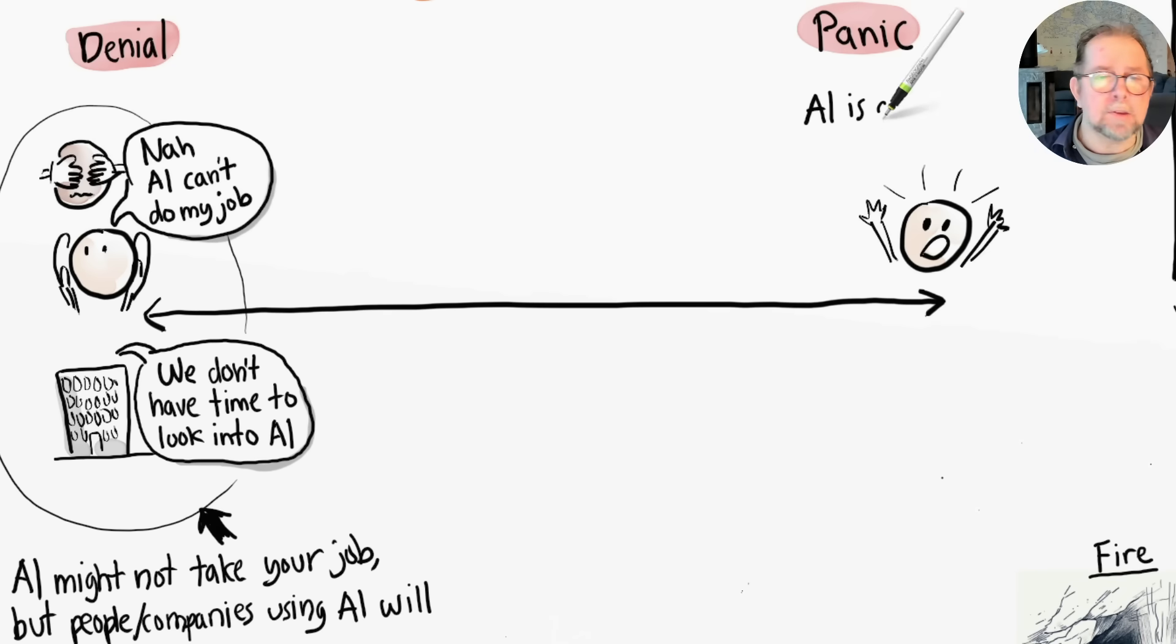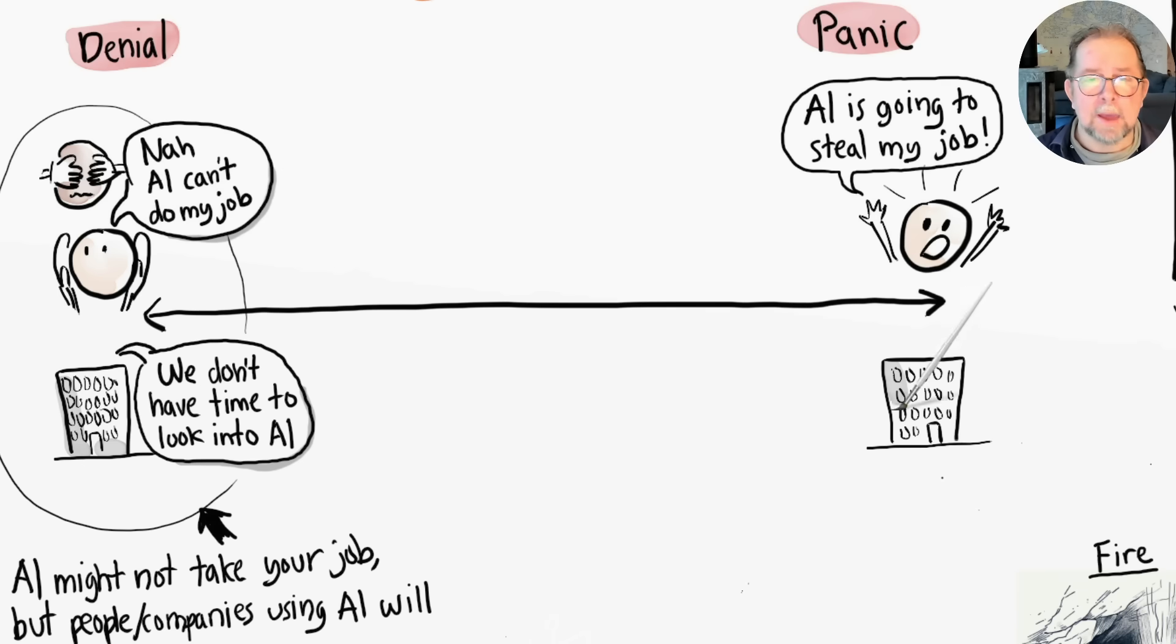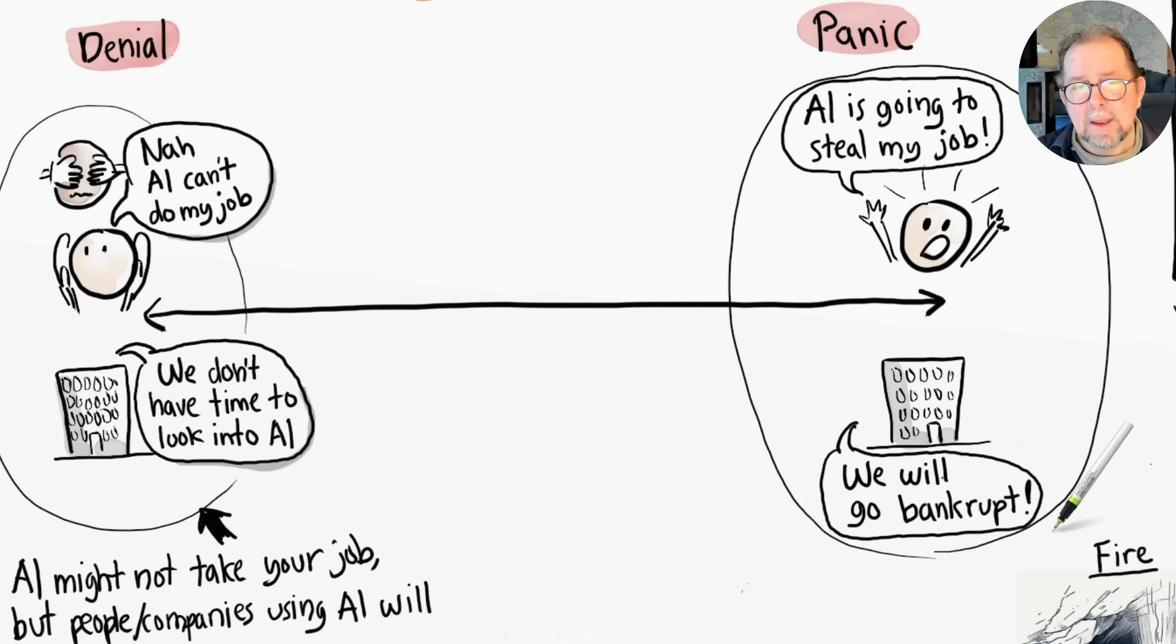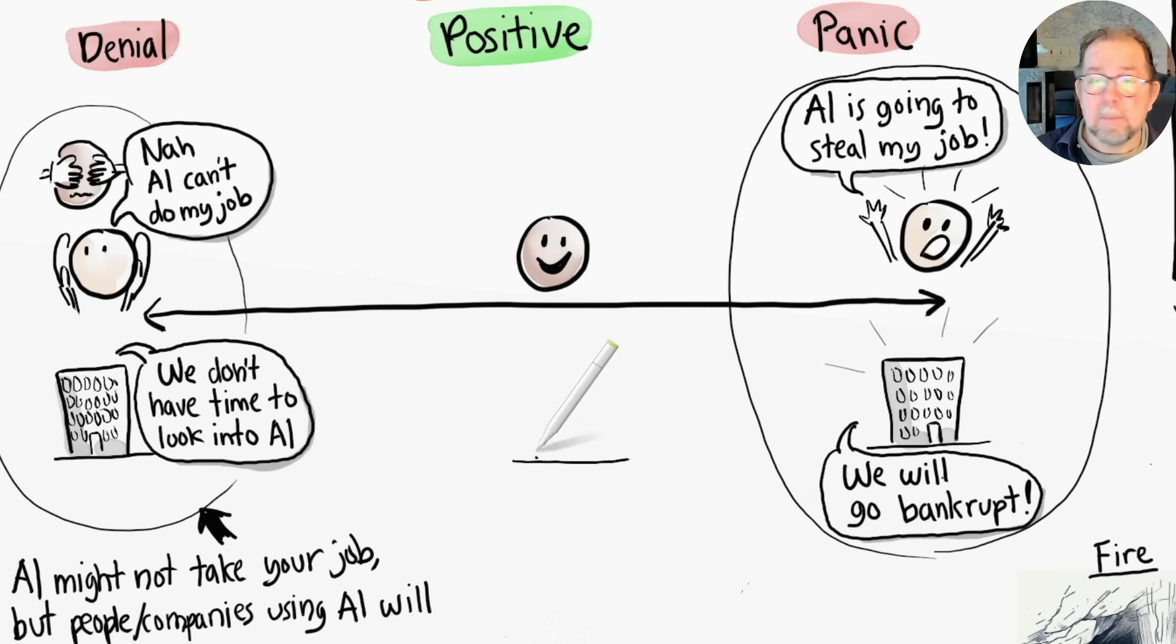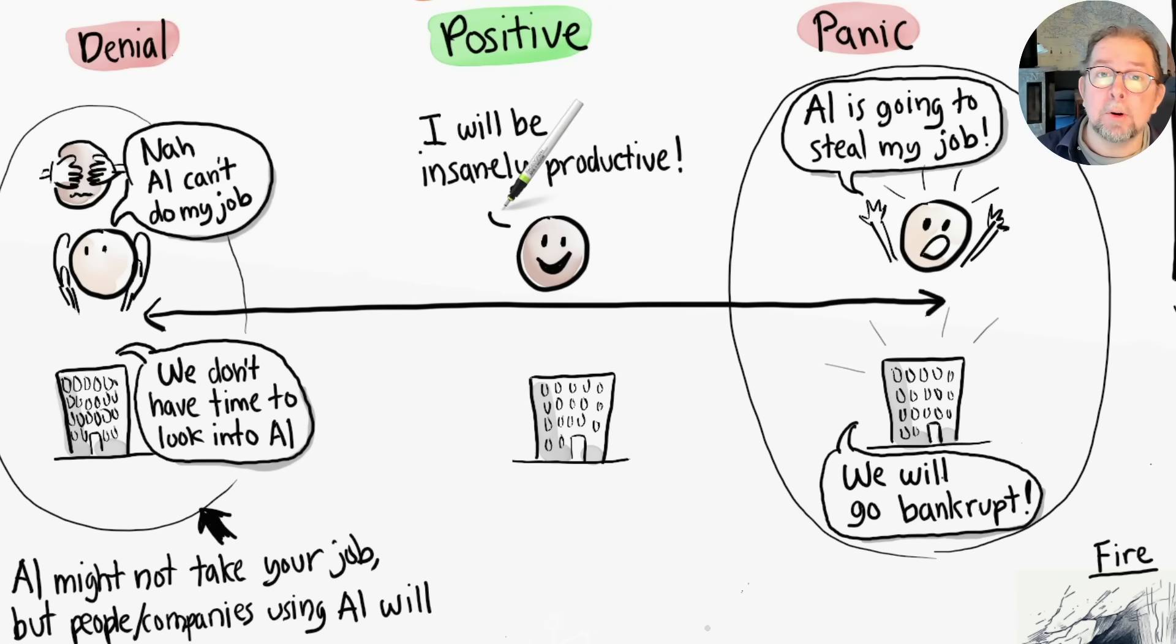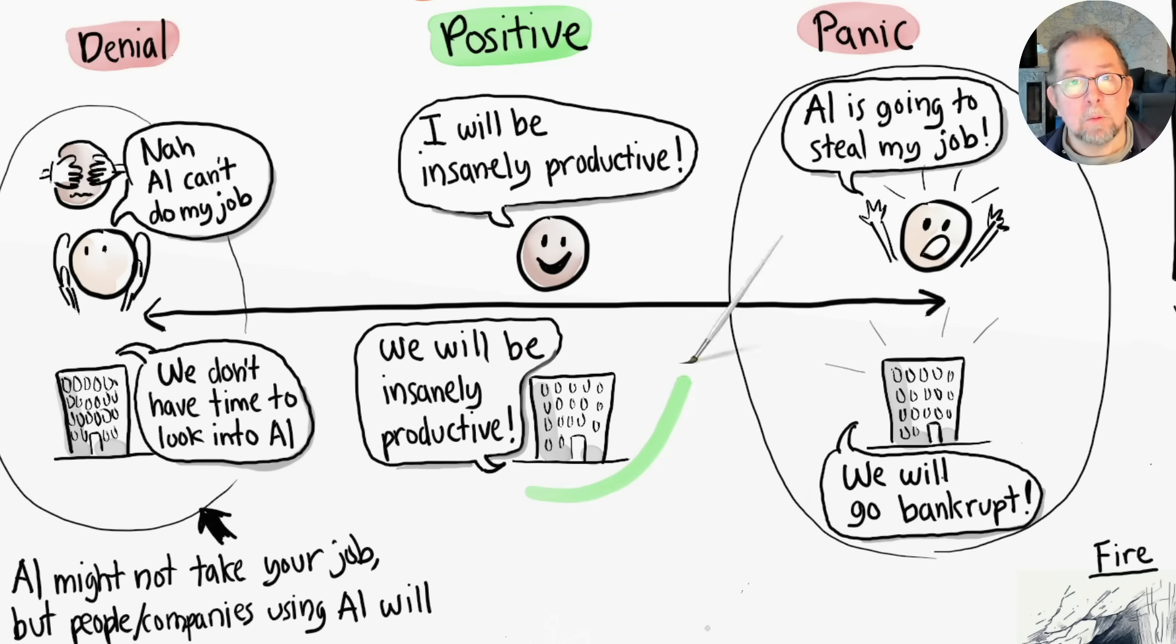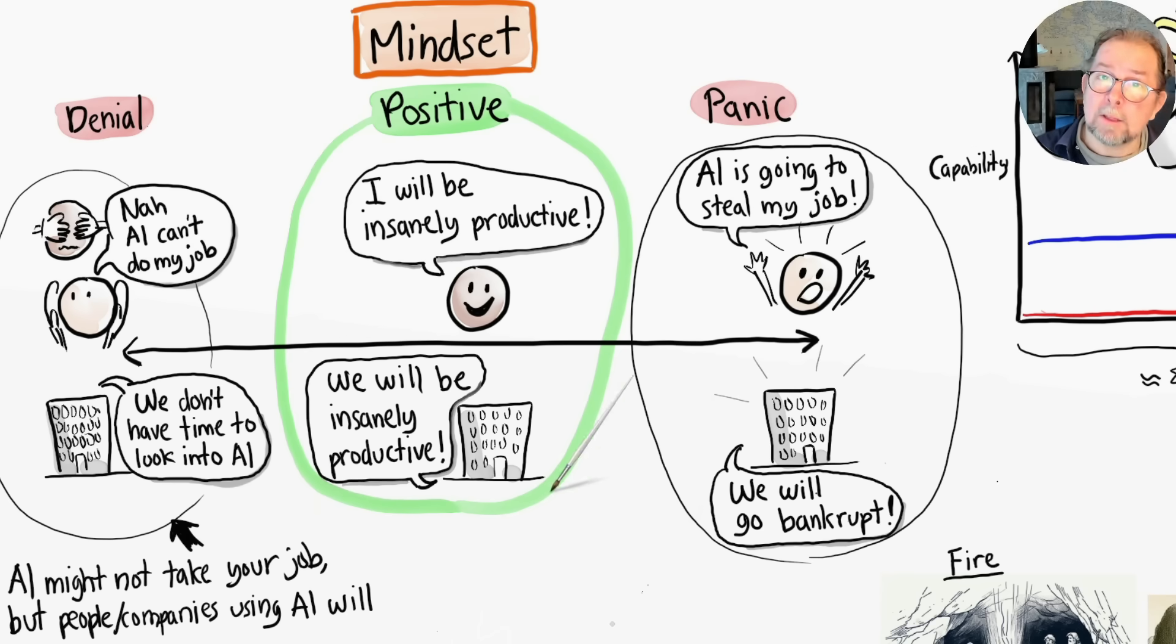Neither of these mindsets are helpful, so I propose a middle ground, a balanced positive mindset: AI is going to make me, my team, my company insanely productive. Personally, with this mindset, I feel like I've gained superpowers. I can go from idea to result in so much shorter time. I can focus more on what I want to achieve and less on the grunt work of building things. And I'm learning a lot faster too—it's like having an awesome mentor with me at all times.